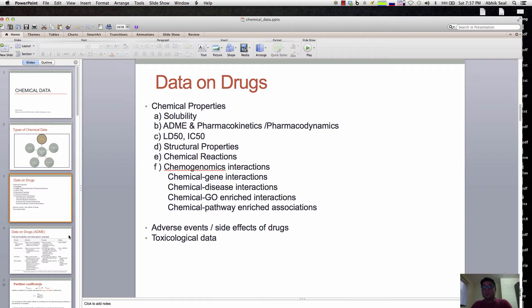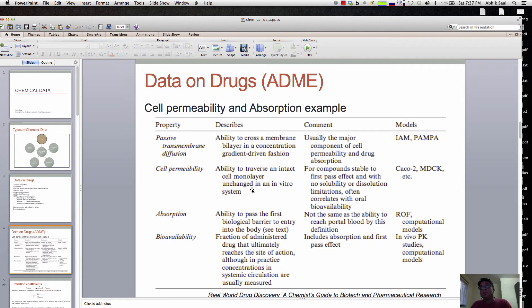I'll show you some examples of what we do in drug discovery. Consider the ADME - absorption, distribution, metabolism, and excretion. We try to model properties like cell permeability, absorption, and bioavailability. For passive transmembrane diffusion, we use the PAMPA model, which is the parallel artificial membrane permeability assay. It indicates how well compounds can passively diffuse through a lipid-infused artificial membrane, mimicking the human membrane system.